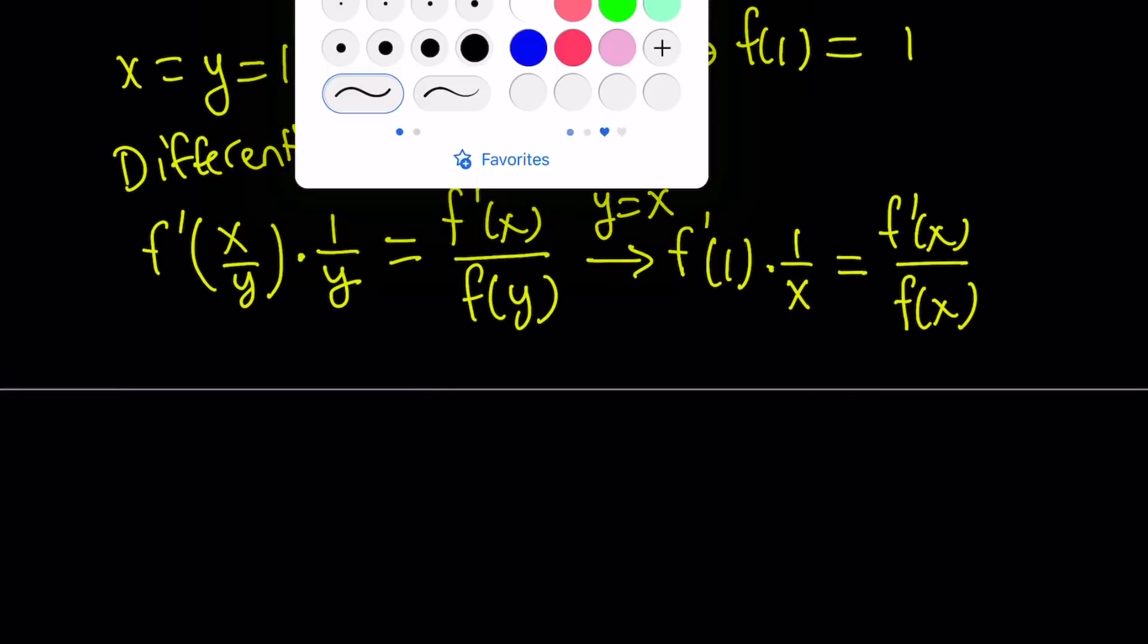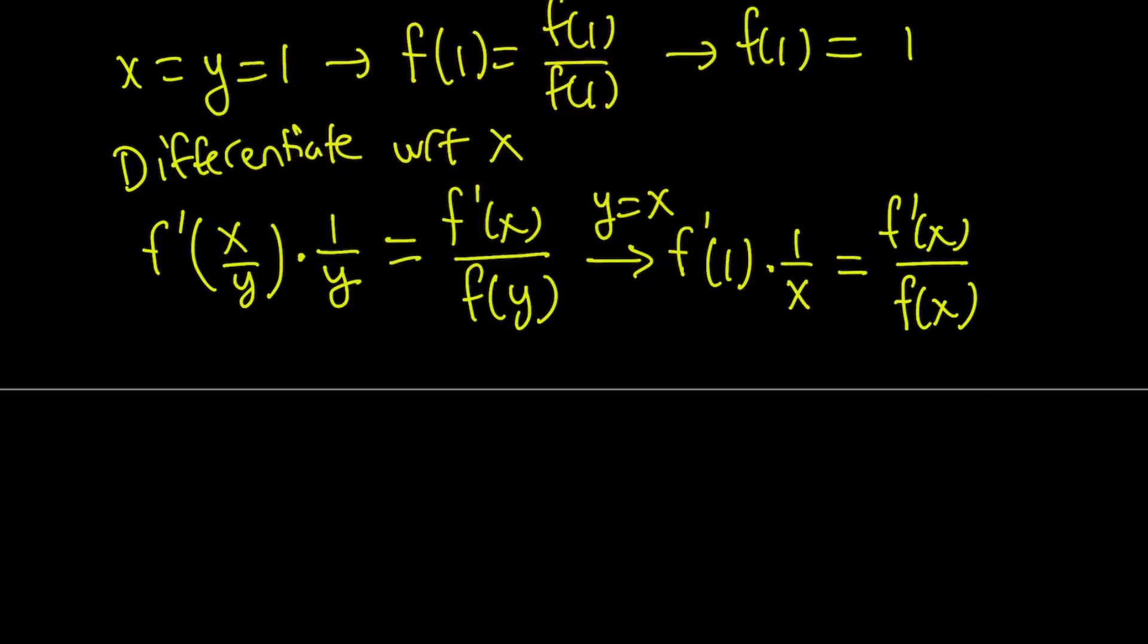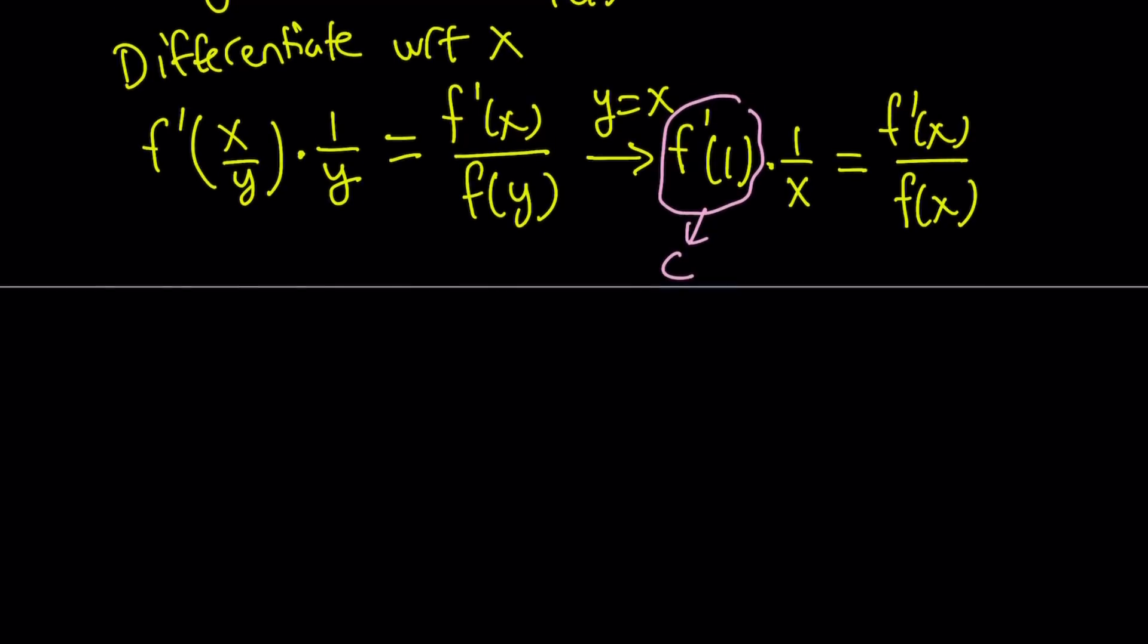Notice that f prime of 1 is a constant, so let's call that c. Now we get the following equation: c over x equals f prime of x divided by f of x, which you can write as y prime over y.